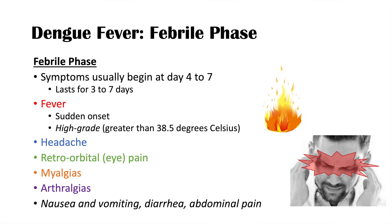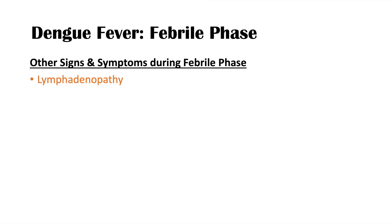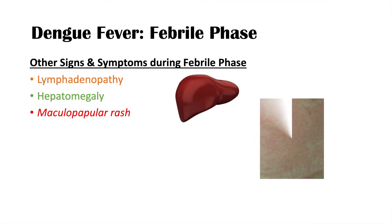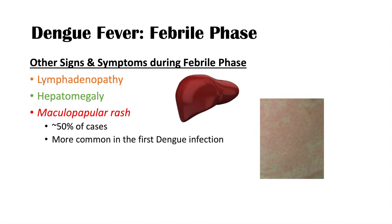Persistent vomiting and abdominal pain are considered worrisome findings indicating a more severe presentation. Other signs include lymphadenopathy, hepatomegaly — an enlarged liver, which is also a warning sign of severe dengue — and a maculopapular rash occurring in approximately 50% of cases. The rash is more common in the first dengue infection and generally erupts about two to five days after fever starts.